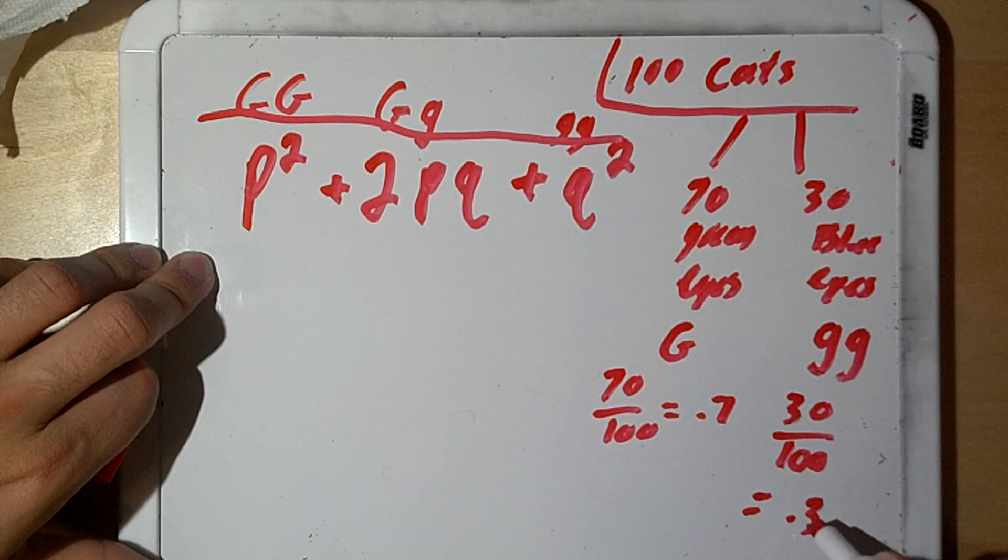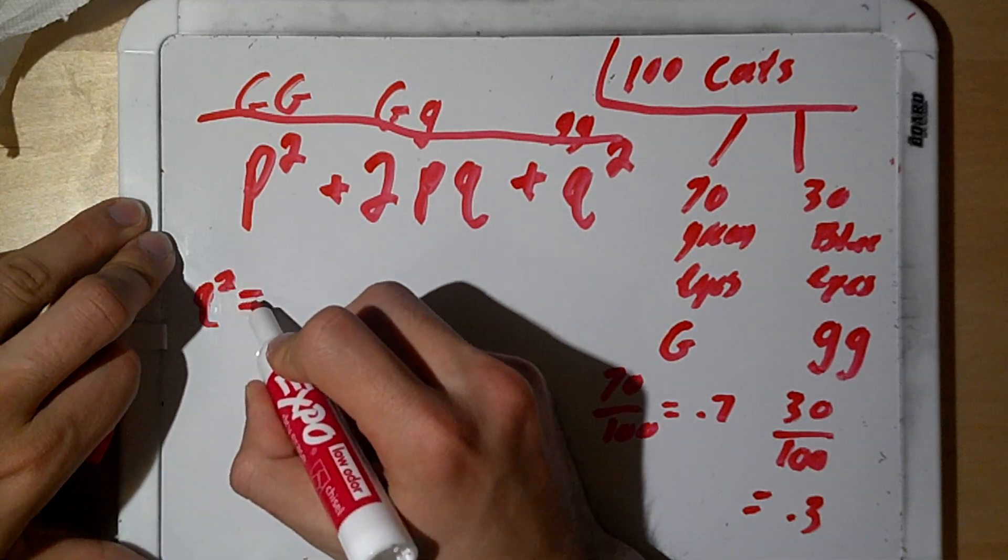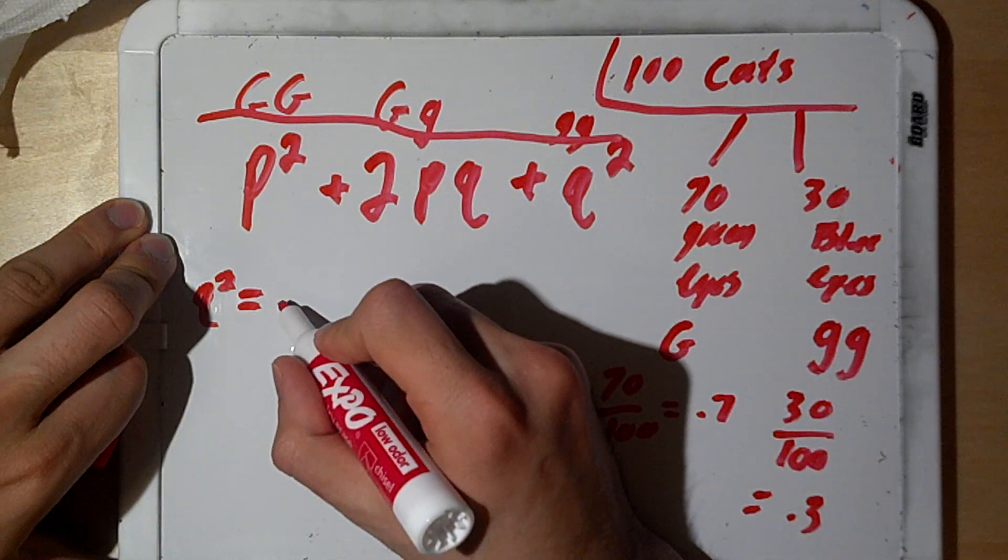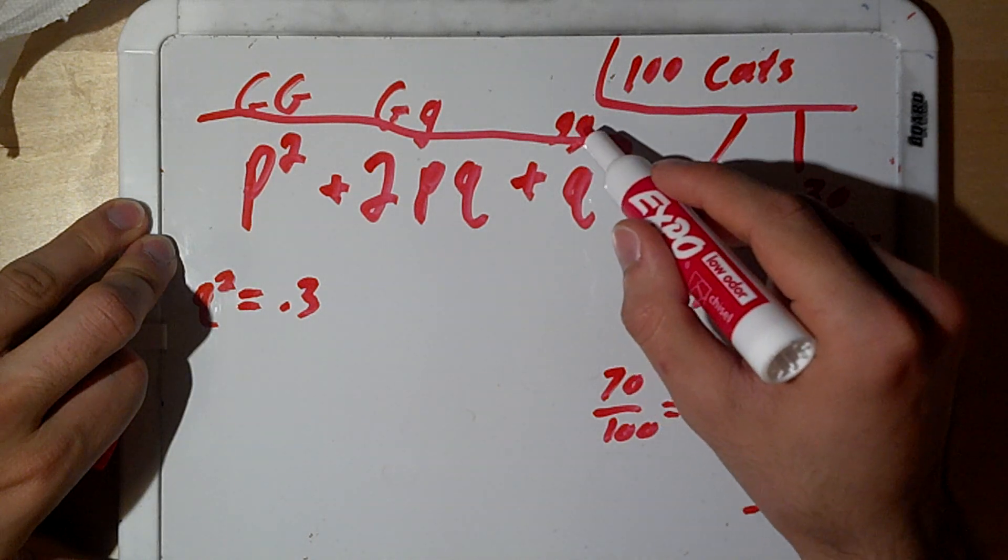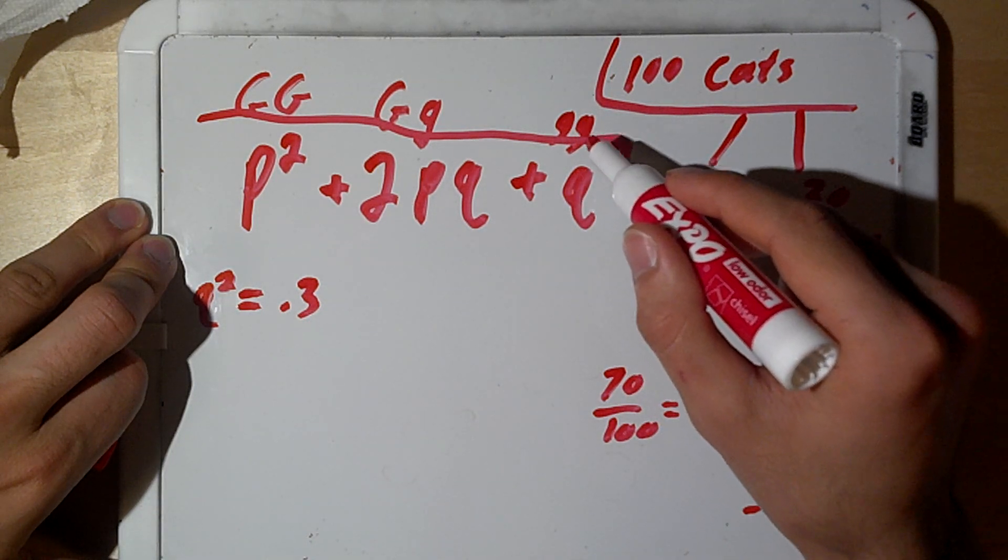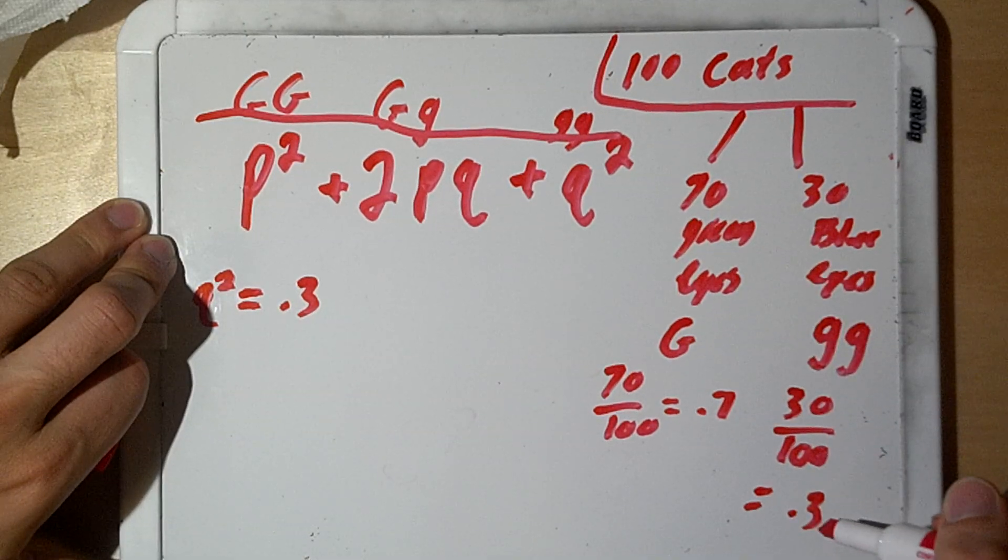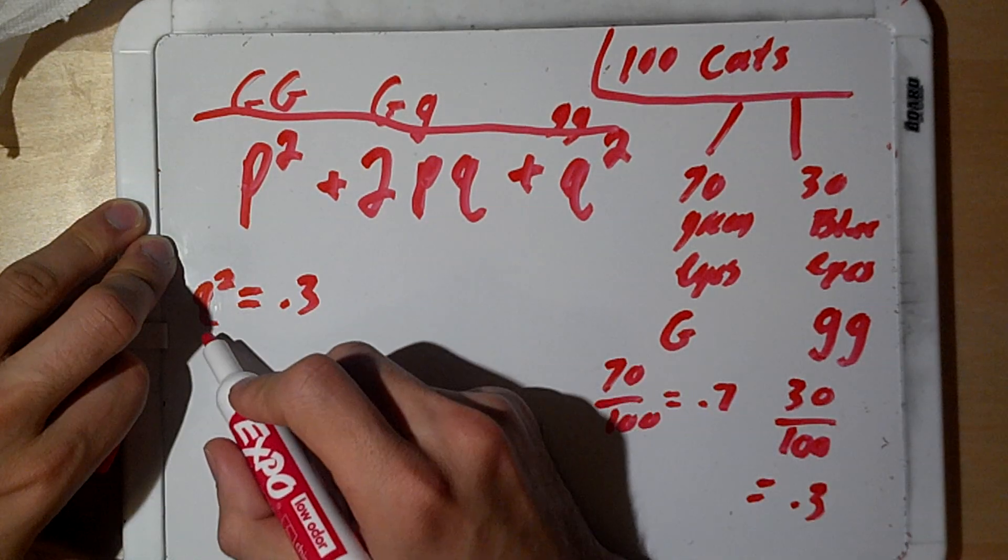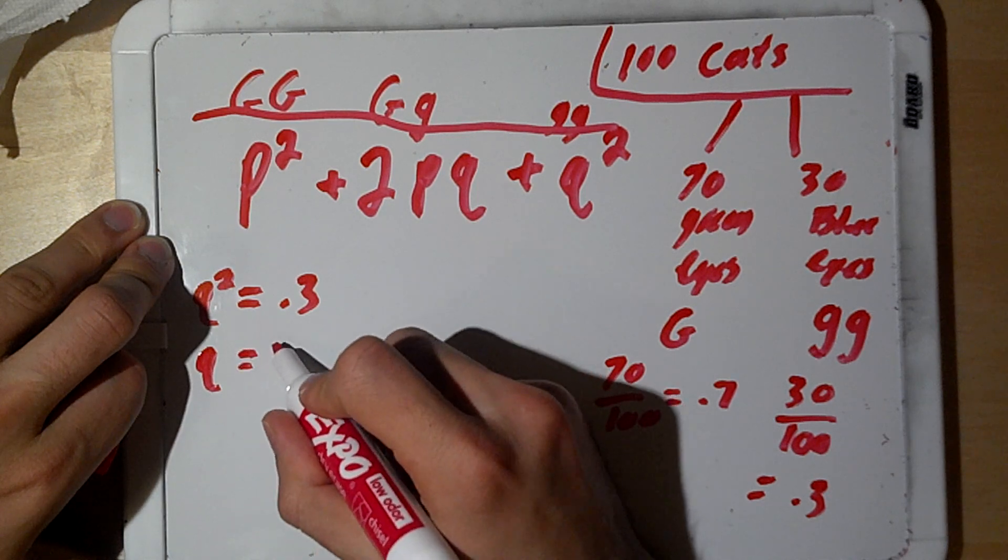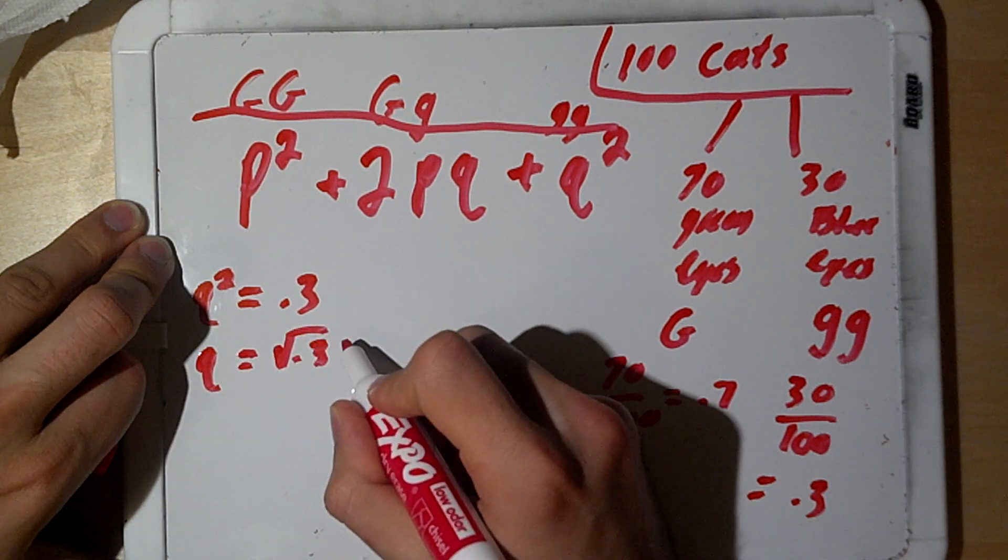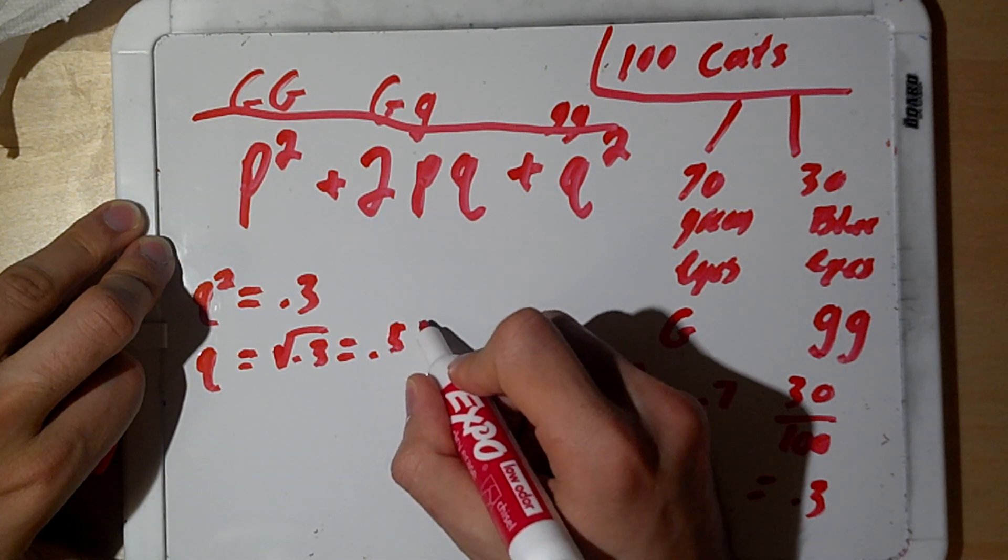So, now we know what our q² value is. So, we're going to make a little chart here. We know q² is going to equal 0.3, because q² is going to resemble the homozygous recessive genotype allele frequencies in the population, which we found to be 30 over 100, therefore it's going to be 0.3. So, now that we have q², we can easily find what the value for q is, by finding the square root of 0.3, which is going to equal about 0.55.